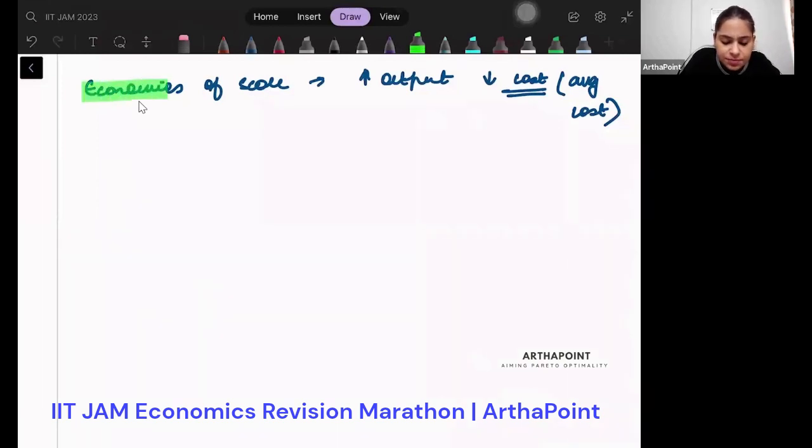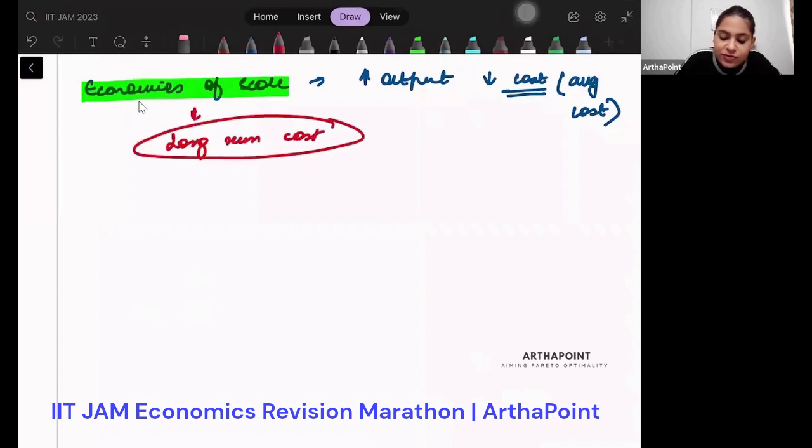This economies of scale is supposed to be a long run concept. Because when I have to scale up or scale down, I can't just be scaling one factor. And in short run, I have only some factors that can be scaled. Scaling will always mean scaling all the inputs. So economies of scale is always a long run concept.